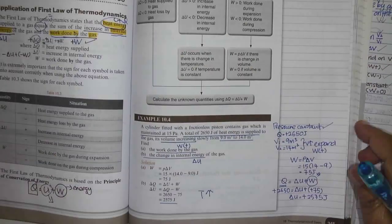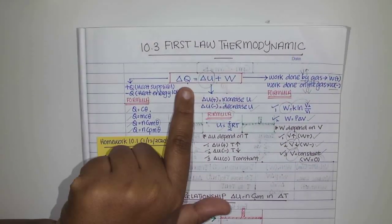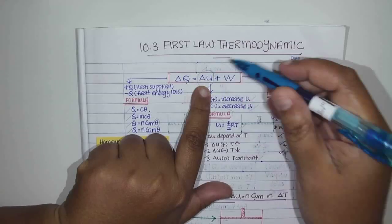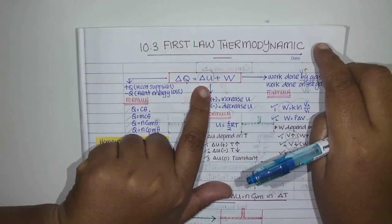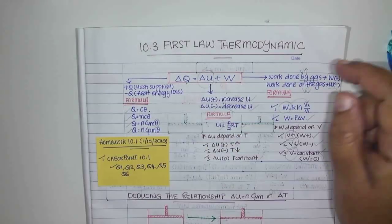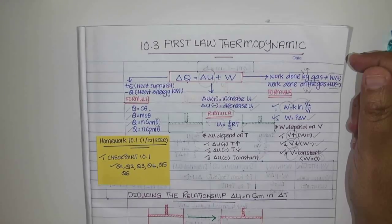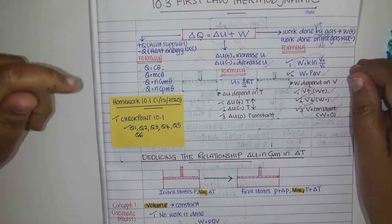So to wrap up: the first law of thermodynamics is delta Q equals delta U plus W. The delta is used because internal energy already exists inside the gas — when you supply heat energy, the internal energy changes. Signs for each quantity are critical. For homework, please do Checkpoint 10.1. Thank you.